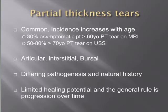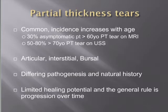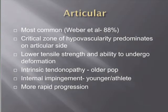Partial thickness tears have very limited healing potential and the general rule is progression over time. However, one study found approximately 10% showed no progression and about 10% actually resolved on follow-up arthrography at two years, while 60-65% progressed. Articular-sided tears are by far the most common — in a series by Weaver published in Arthroscopy in 1999, 88% of partial thickness tears in his cohort were articular-sided. This is mainly due to the critical zone of hypovascularity predominating on the articular side, which also has lower tensile strength and lower ability to undergo deformation.